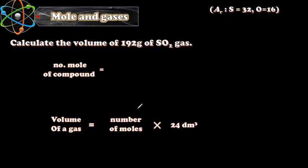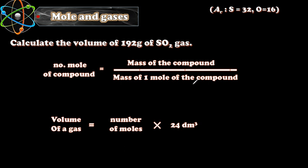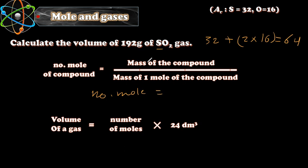Number of moles of a compound equals mass of the compound over mass of one mole of the compound. The molar mass of sulfur dioxide: sulfur is 32, plus oxygen 2 times 16, equals 64 g/mol. So number of moles equals 192 over 64, which equals 3 moles.